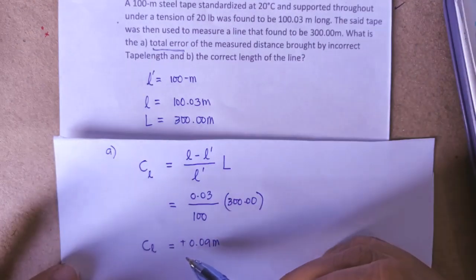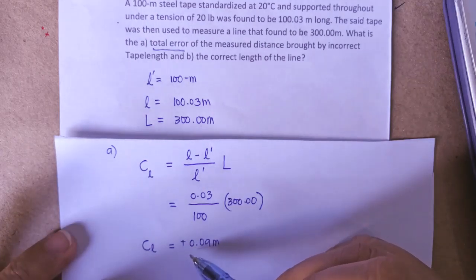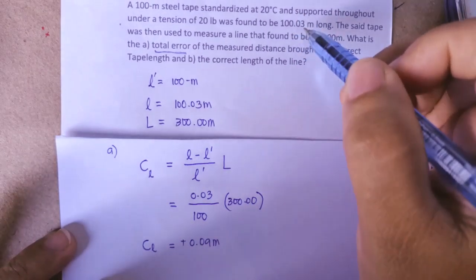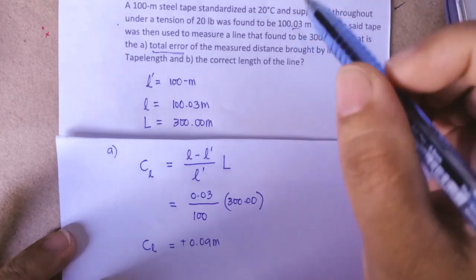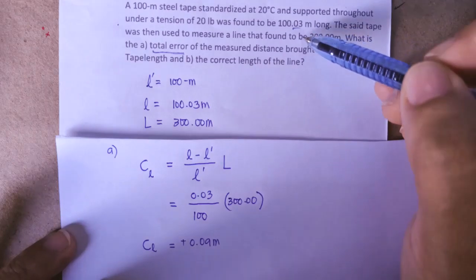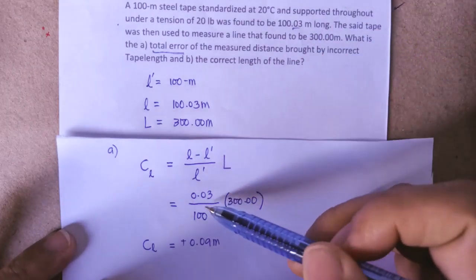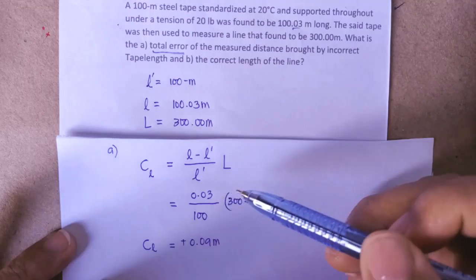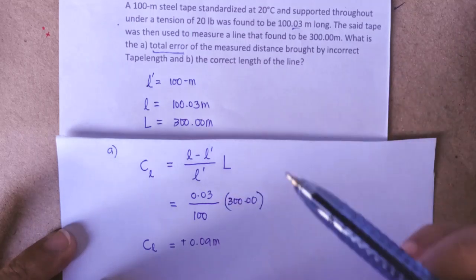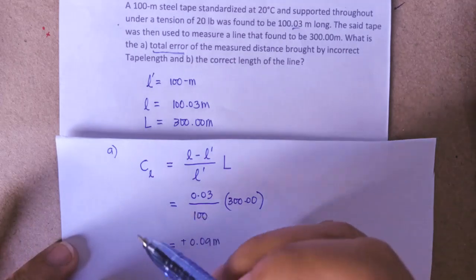This will give you a positive value 0.09, this is in meters. The positive value here indicates that the tape is too long, and we can also tell by reading the problem because instead of 100 meters the tape was found out to be 100.03 meters, which is 0.03 meters longer than the nominal length.